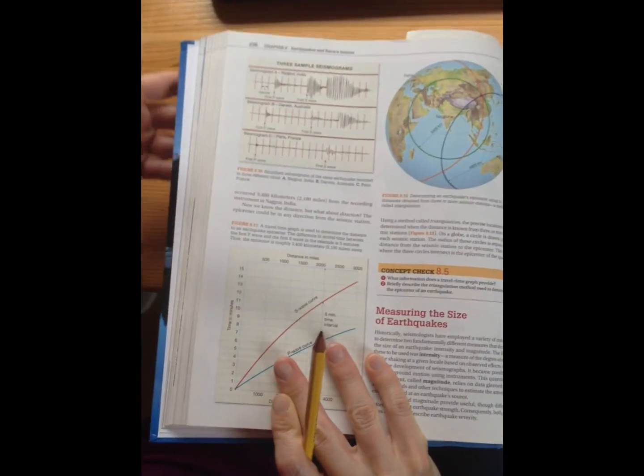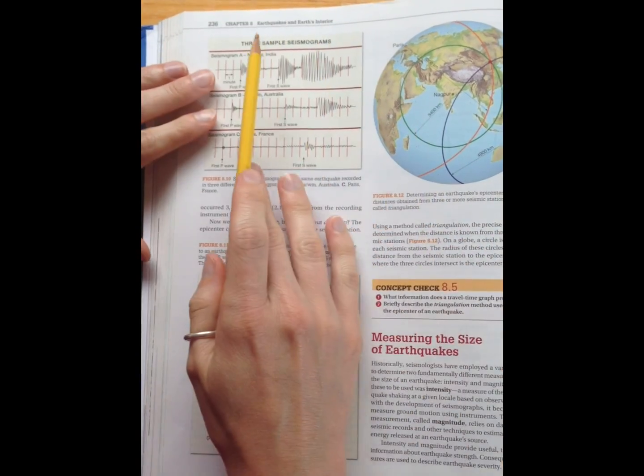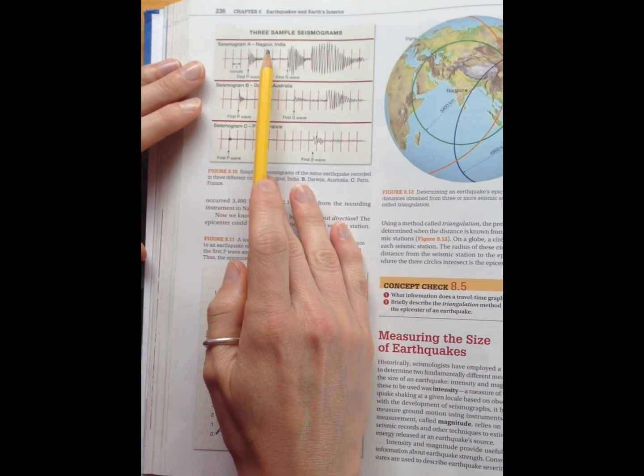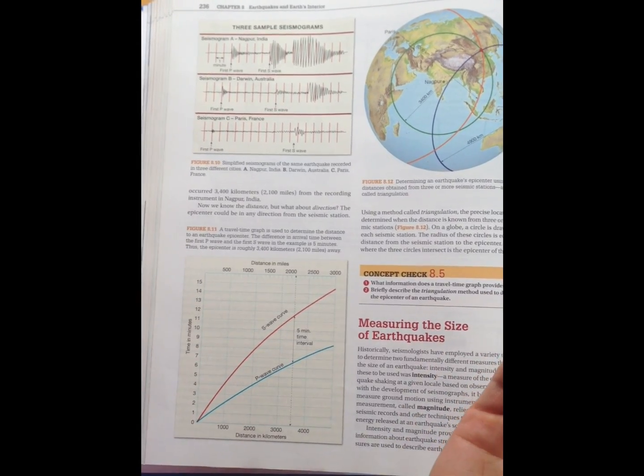So I'm just using your textbook, the Earth Science textbook, I'm on page 236. So imagine you're in Nagpur, India. You've just felt an earthquake, and luckily enough, you have a seismic station there.